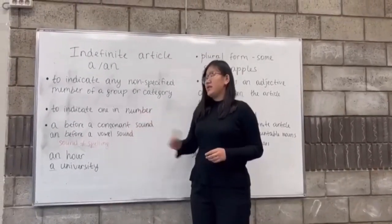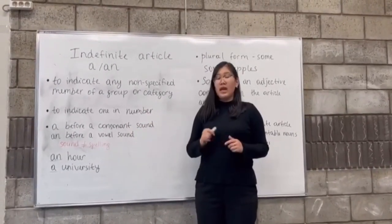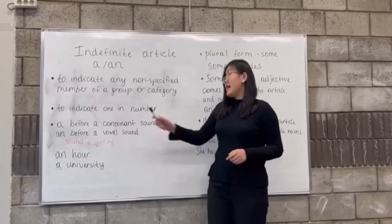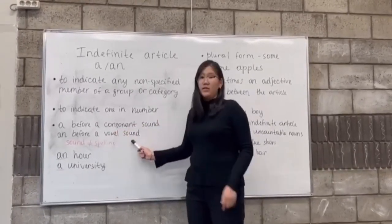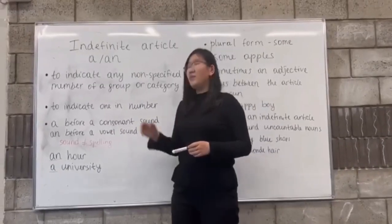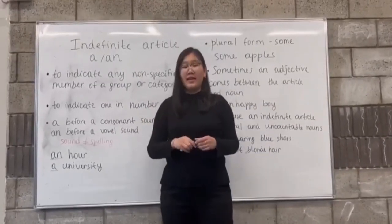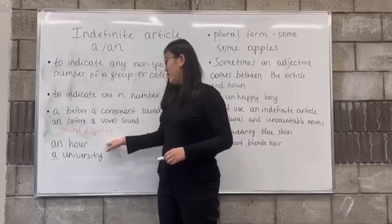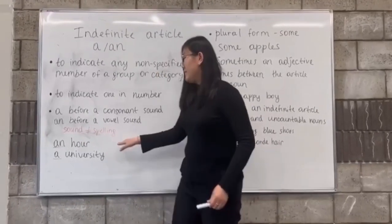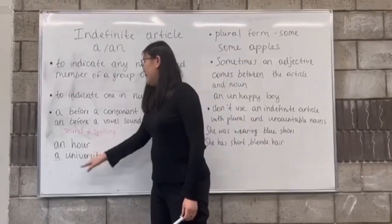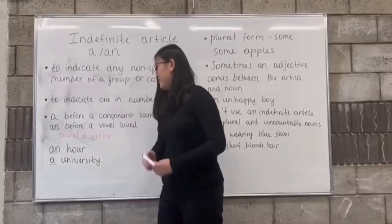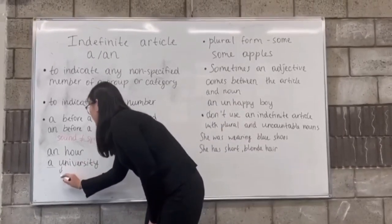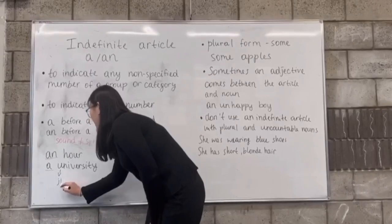Now let's talk about the third case. We use 'a' before a consonant sound and 'an' before a vowel sound. The choice of 'a' and 'an' depends on sound, not spelling. For example: 'an hour' and 'a university.' As you can see, 'university' starts with a U, but we say the sound 'you,' so we use 'a.'